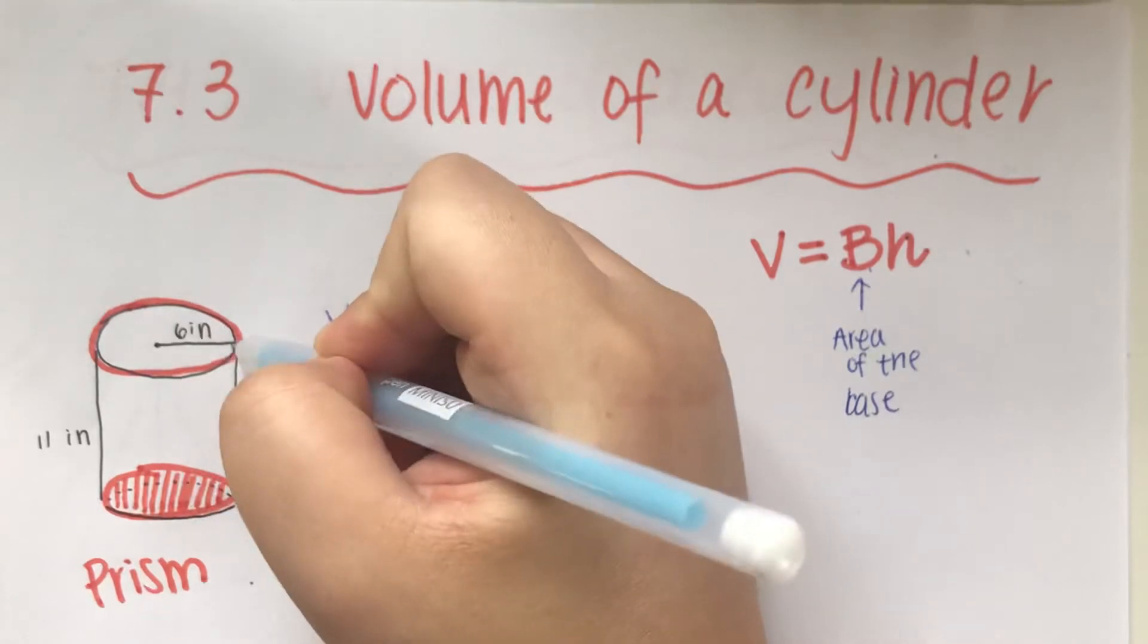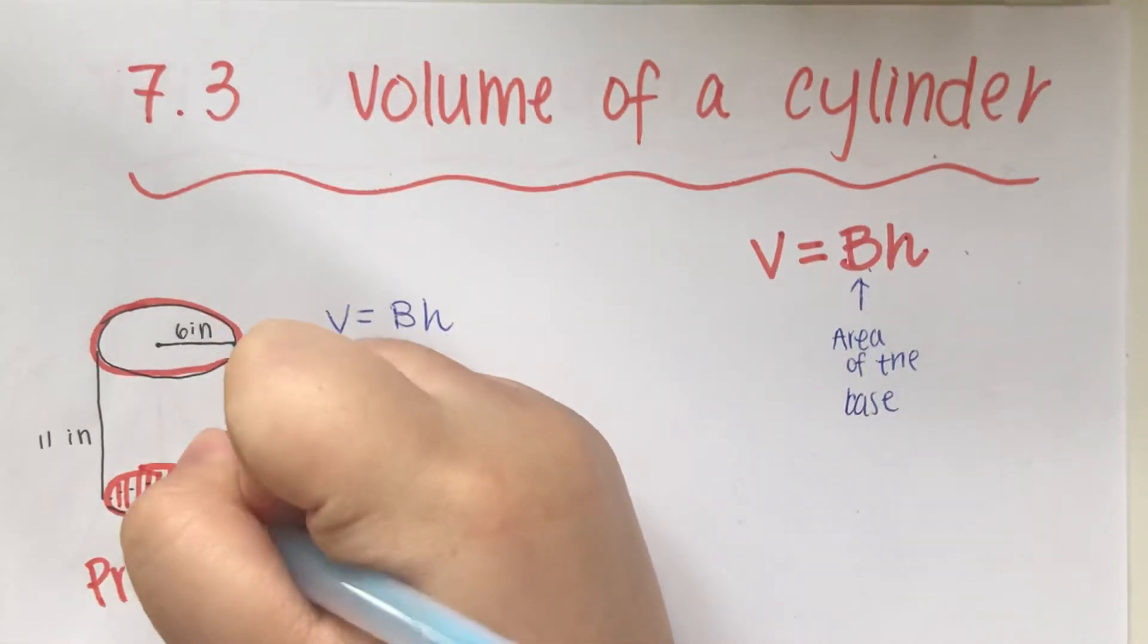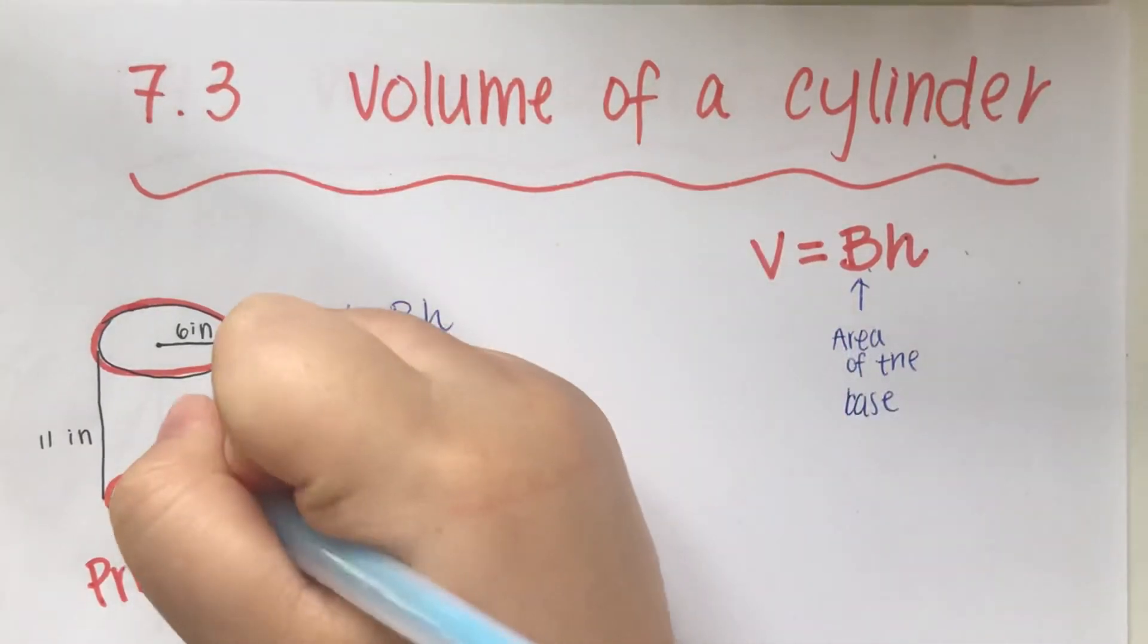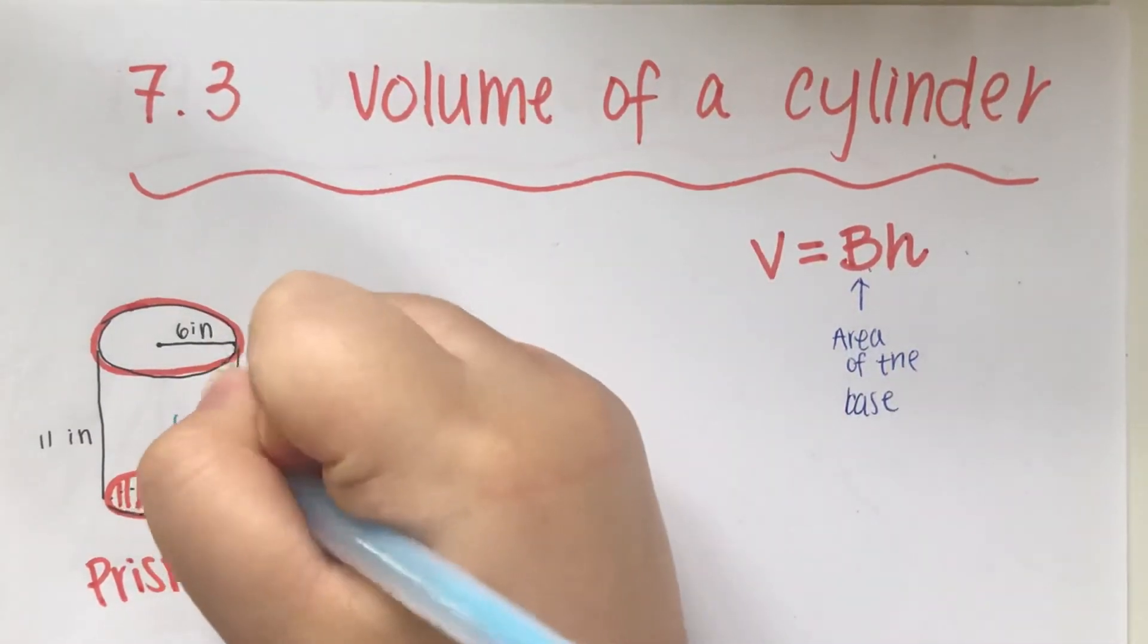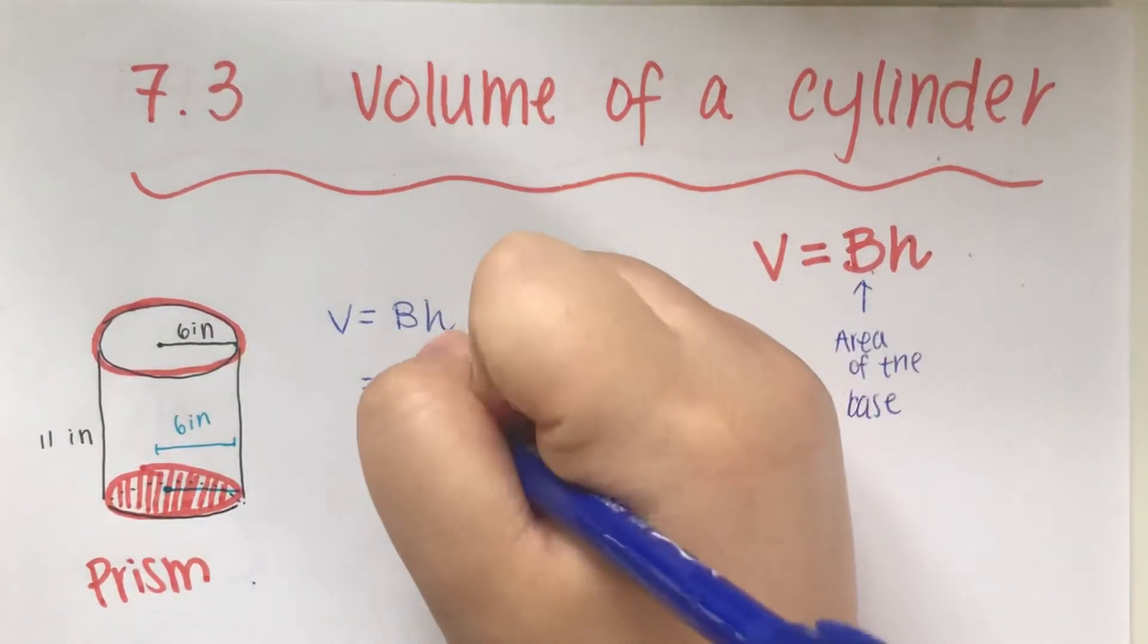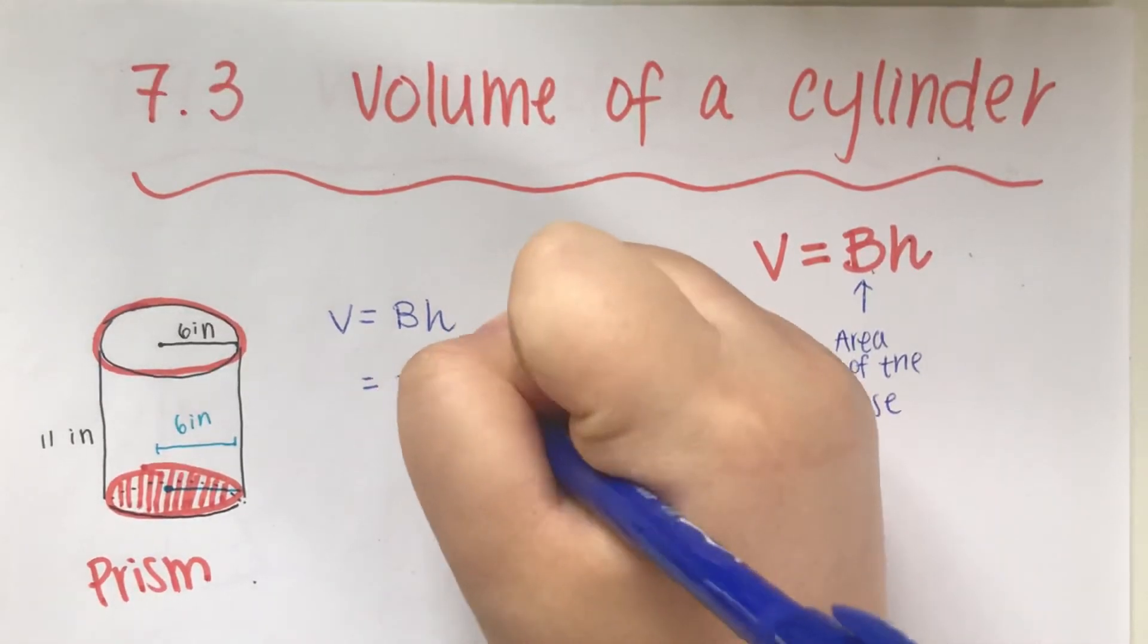From the top, from the center to the edge, it's 6 inches. So that means on the bottom, if I go from the center to the edge, this should also be 6 inches, and we call this radius. From our first lesson we know that area of a circle is πr².